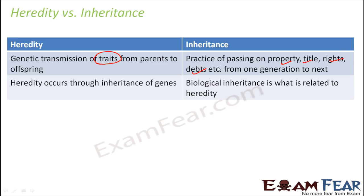Any sort of things which get passed on from one generation to another is known as inheritance. But heredity occurs through inheritance of genes. When we talk about inheritance in terms of genes — the characteristics present inside our genes, carried from one generation to another — that is called heredity. So biological inheritance is what is related to heredity. We can say that heredity is a type of inheritance, but specifically when inheritance happens in the form of genes — genetic inheritance — that is heredity.